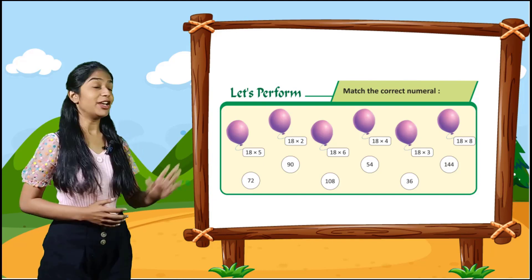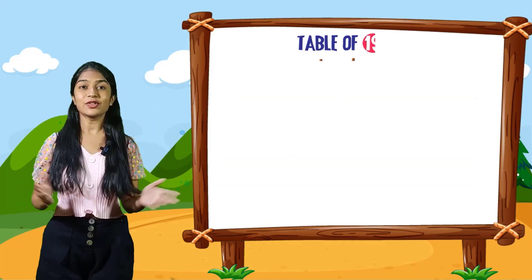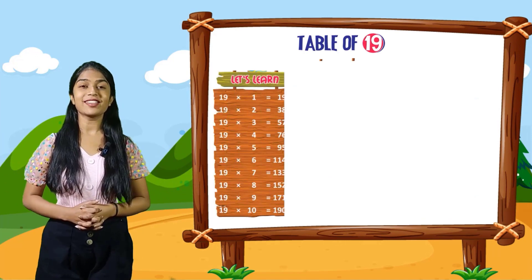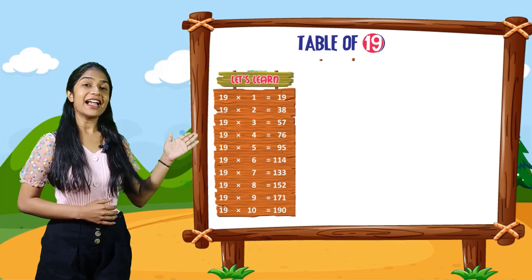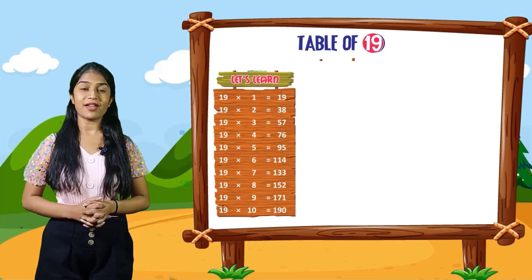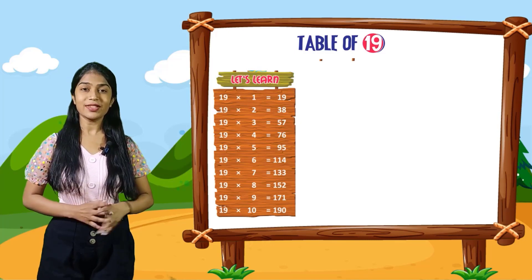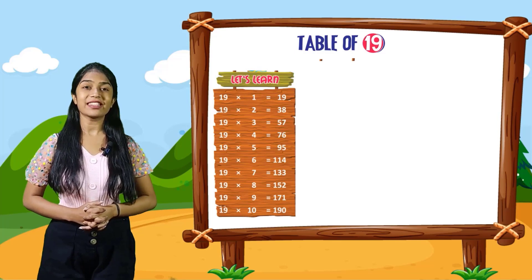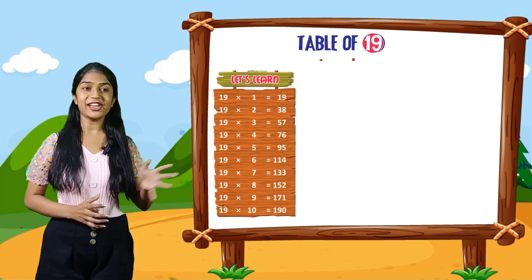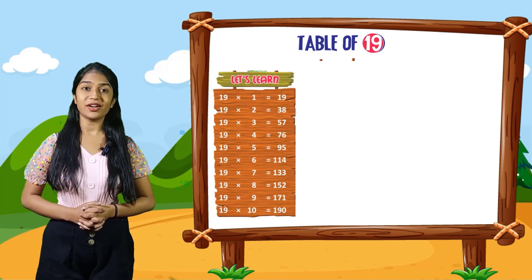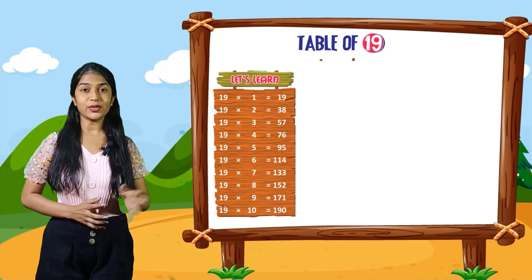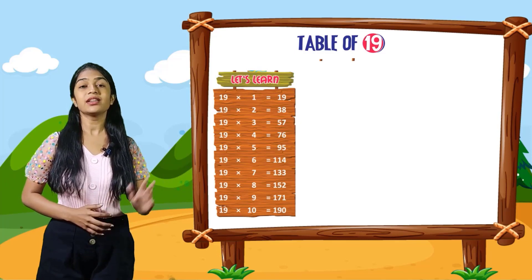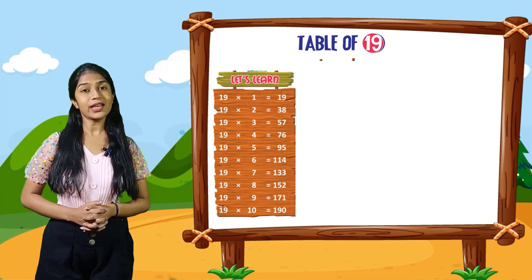So now let's start the table of 19. Let's learn. 19 into 1 is equal to 19. 19 into 2 is equal to 38. 19 into 3 is equal to 57. 19 into 4 is equal to 76. 19 into 5 is equal to 95. 19 into 6 is equal to 114. 19 into 7 is equal to 133. 19 into 8 is equal to 152. 19 into 9 is equal to 171. 19 into 10 is equal to 190.